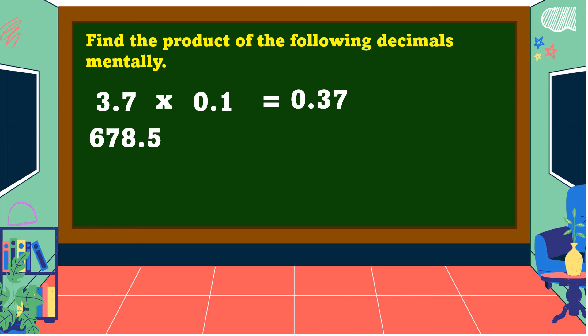Another one: six-hundred-seventy-eight and five-tenths times one-hundredth. The answer is equal to six and seven-hundred-eighty-five-thousandths.